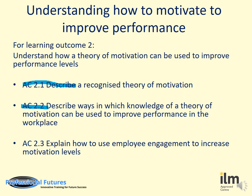AC 2.2 is to describe — describe ways in which knowledge of a theory of motivation can be used to improve performance in the workplace. This is where you paint a picture in words on how your new knowledge of the theory can improve performance — for example, how hygiene factors don't actually motivate. AC 2.3 is to explain — explain how to use employee engagement to increase motivation levels, applying meaning and reasons why employee engagement can increase motivation, for example making work fun or involving staff in decisions.